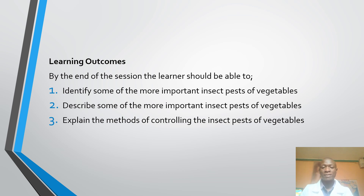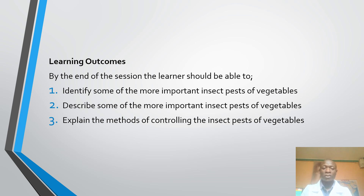Starting from the learning outcomes, you as the learner, by the end of this session, you should be able to: 1. Identify some of the most important insect pests of vegetables. 2. Describe some of the most important insect pests of vegetables. 3. Explain the methods of controlling these insect pests of vegetables.